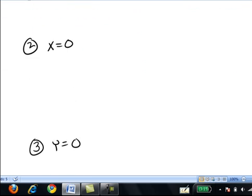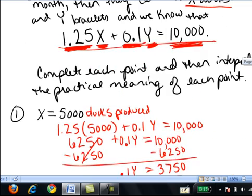In number 2, we're told that x equals 0. Again, x stands for the number of ducks. So we're told they're making no ducks at the Acme factory. And we're wondering how many bracelets can they make. Again, we go back to our formula and we're going to let x be 0 in the formula.